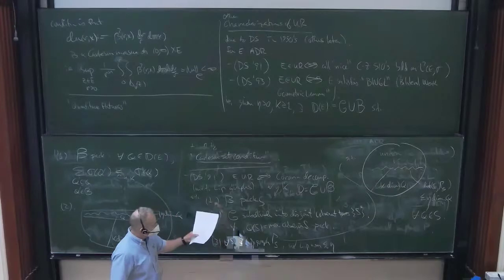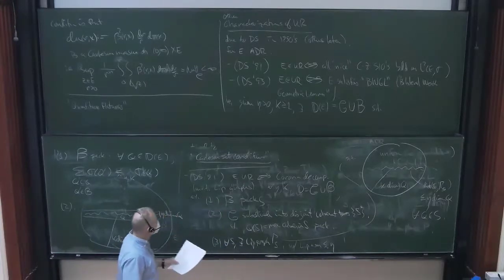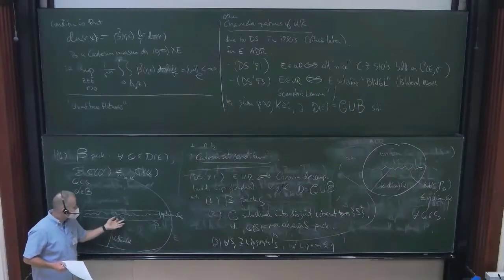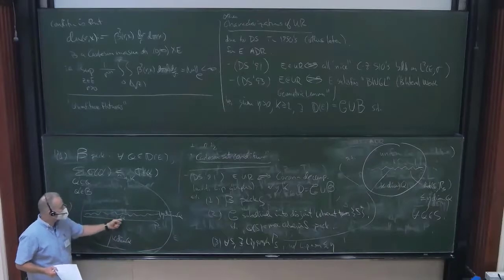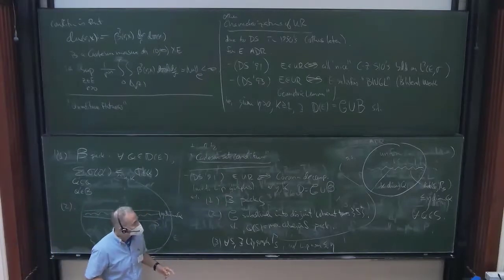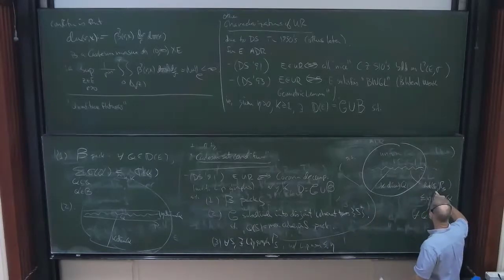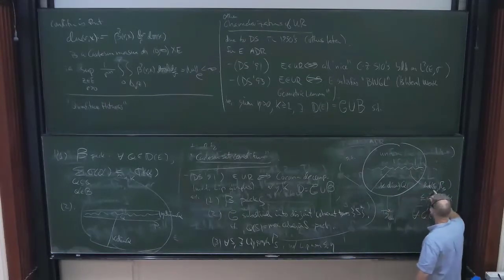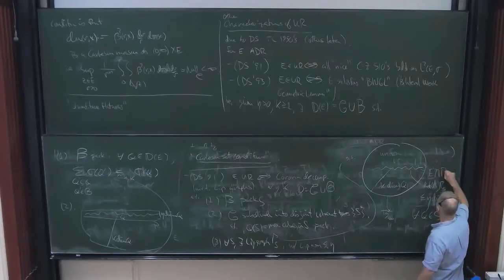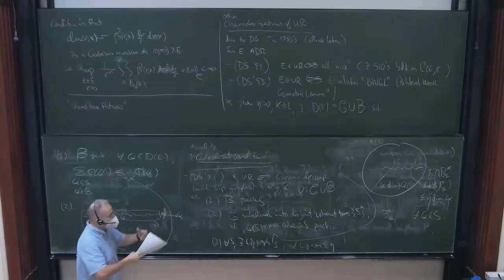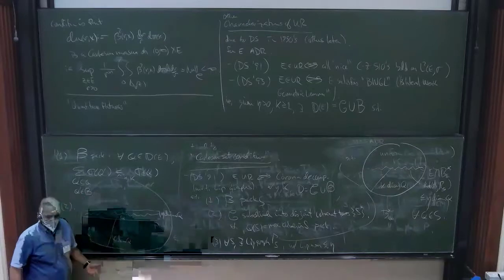So let me point out the maybe subtle but significant difference between this and the packing condition here. Here in the packing condition, the bilateral weak geometric lemma, the good cubes were each good individually. Each cube had its own plane that it was close to in the Hausdorff distance sense. What I mean is that E within this ball, maybe, let me call this ball BQ star and what I should have written is that this is E intersect BQ star. Yeah, that's what I, yeah, thanks, thanks, you're right. Which includes Q but it's just like it's a dilated version of Q.